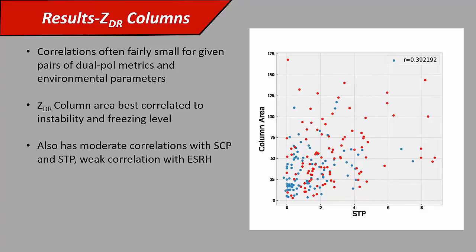The interesting thing here is that the correlations for these composite parameters were actually better than any of the individual parameters alone. There was also a weak correlation with effective storm-relative helicity. One of the interesting things we found is that there weren't really any good correlations between ZDR column size and storm-relative flow magnitude. Based on work that John Peters has done showing that storm-relative flow magnitude is really important in regulating updraft size, we were really surprised by this.